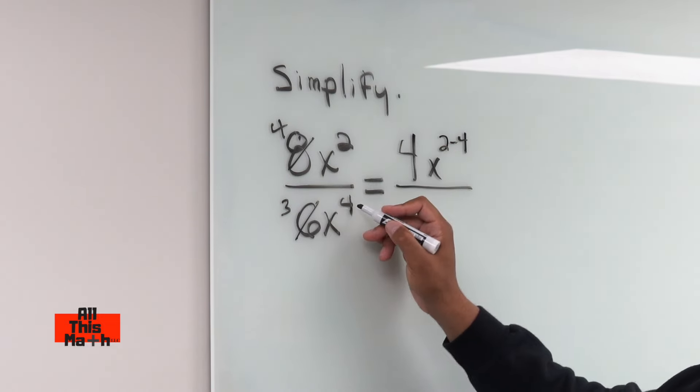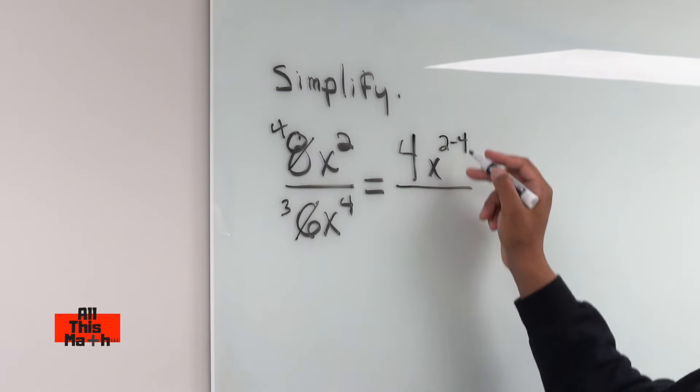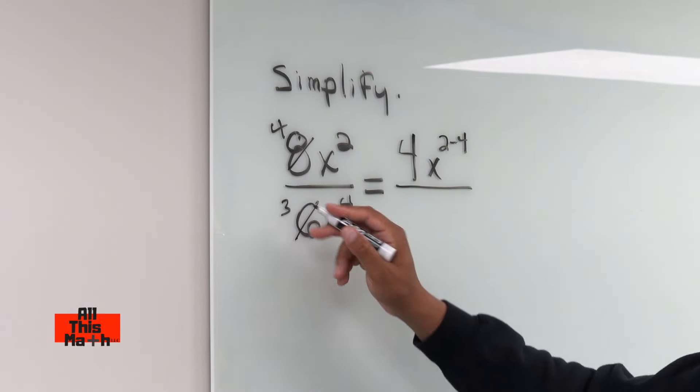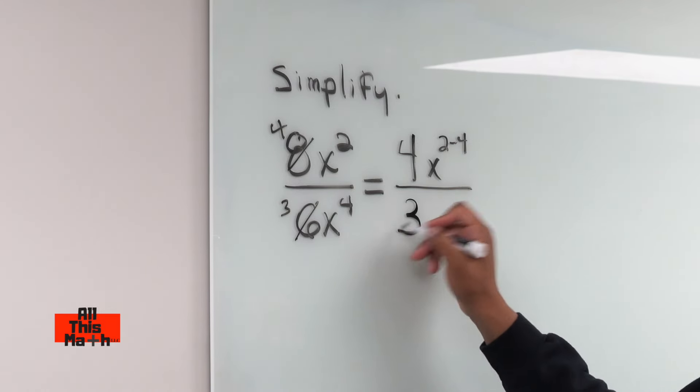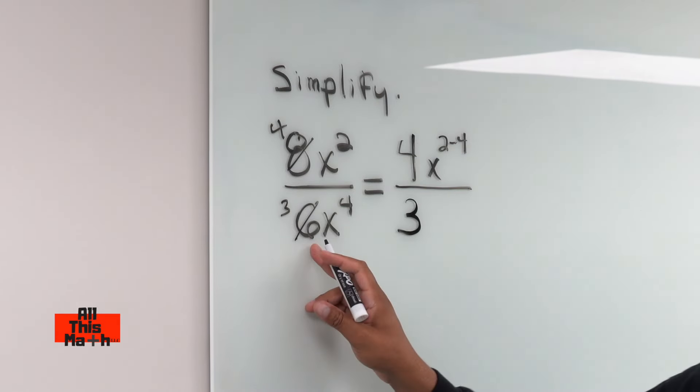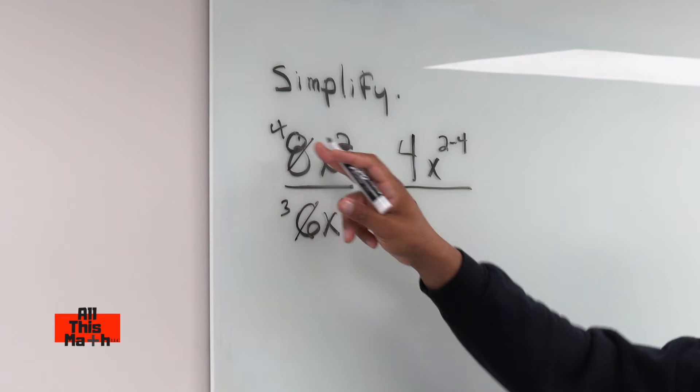The top exponent minus the bottom exponent, top exponent minus the bottom exponent, so it's going to be 2 minus 4. But don't forget that this 3, this 6 turned into a 3, so we also need to have that. We still need to have that 3 in the denominator because the 6 became a 3, just as the 8 turned into a 4.